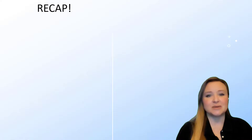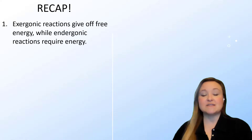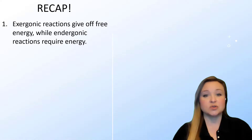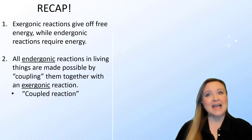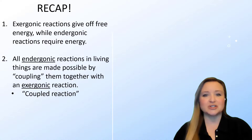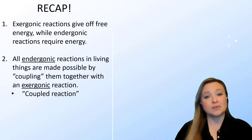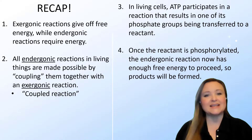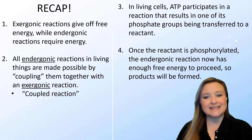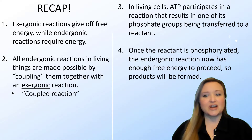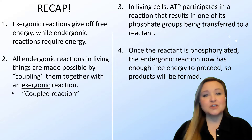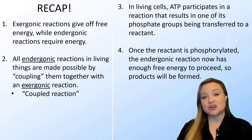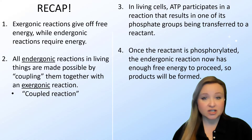Let's recap what we learned today about ATP and coupled reactions. Exergonic reactions give off free energy, while endergonic reactions require energy in order to proceed. All endergonic reactions in living things are made possible by coupling them with an exergonic reaction — the exergonic reaction gives off free energy that fuels the endergonic reaction, which is why we call them coupled reactions. In cells, ATP participates in the exergonic reaction, transferring a phosphate group to one of the reactants, phosphorylating it so the endergonic reaction has enough free energy to proceed and form products. Take five minutes to walk through and summarize this process on your own.